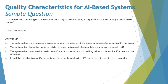The very first question is question number one: which of the following statements is most likely to be specifying a requirement for autonomy in an AI-based system? Two important things to remember here: one, what is autonomy in an AI-based system, and two, what are the requirements for autonomy in an AI-based system.